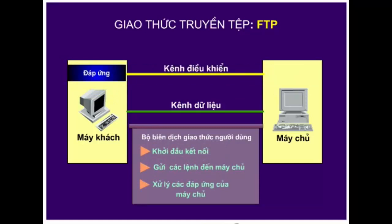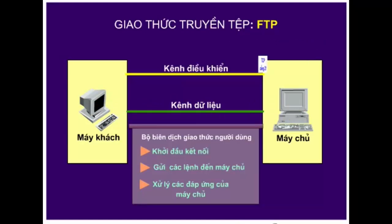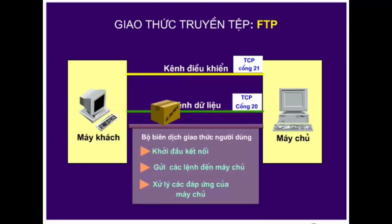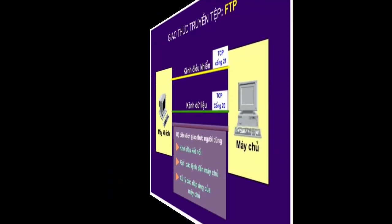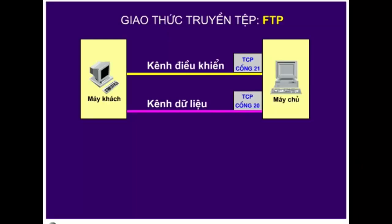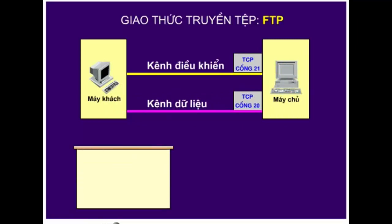Sau đó, kênh dữ liệu được thiết lập. Kết nối điều khiển của FTP tương tự như của Telnet. FTP sử dụng cổng TCP21 để truyền lệnh và cổng TCP20 để truyền dữ liệu. Kết nối điều khiển phải được giữ trong suốt thời gian truyền dữ liệu. Nguyên tắc cơ bản của quá trình truyền tệp là đảm bảo dữ liệu đến đích an toàn và tin cậy. Nhiệm vụ này được thực hiện nhờ giao thức TCP.